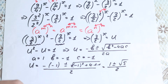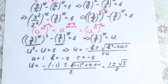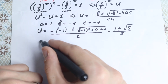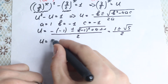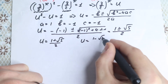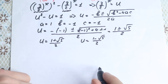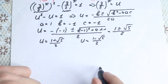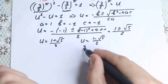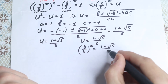So this is our u. We find two cases: u equal to 1 plus square root of 5 over 2, and u equal to 1 minus square root of 5 over 2. Let's start with the minus case: 3 over 2 to the power x equals 1 minus square root of 5 over 2.